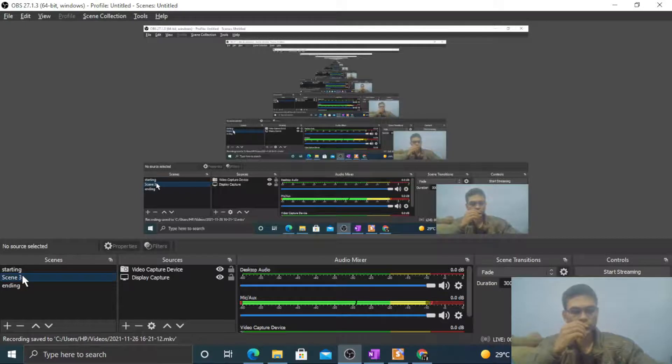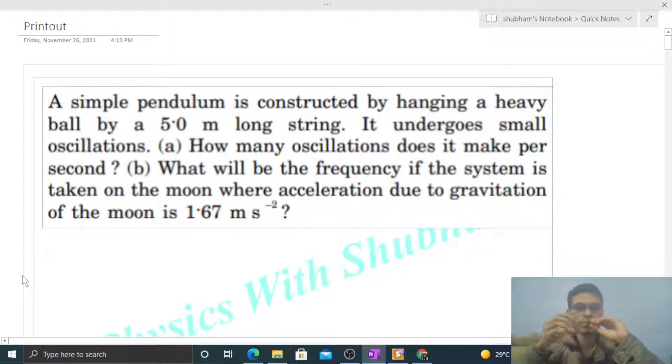Hi everyone, today let's discuss this interesting problem. A simple pendulum is constructed by hanging a heavy ball by a 5 meter long string. It undergoes small oscillations. How many oscillations does it make per second?